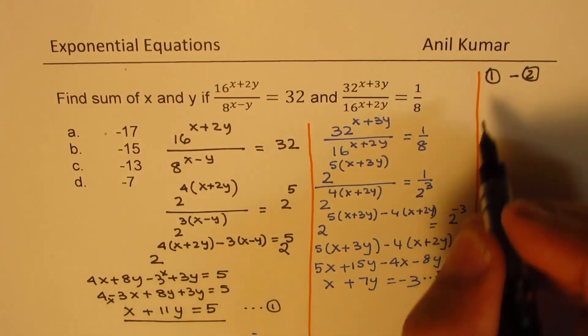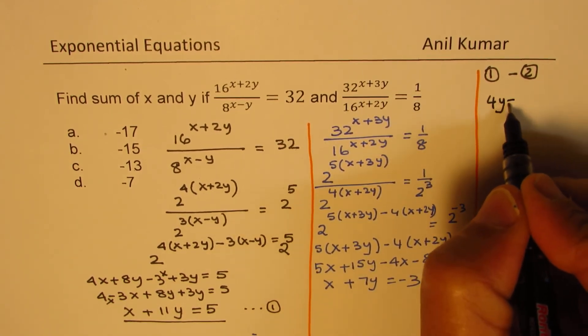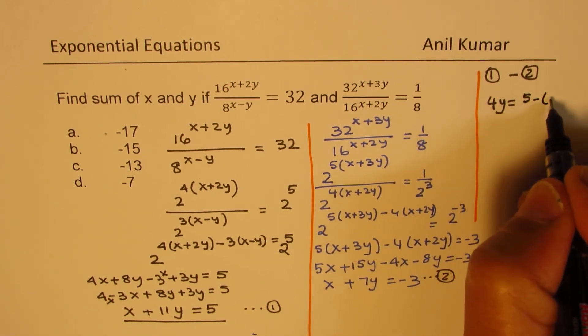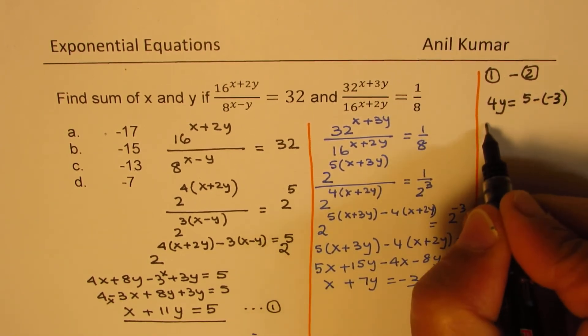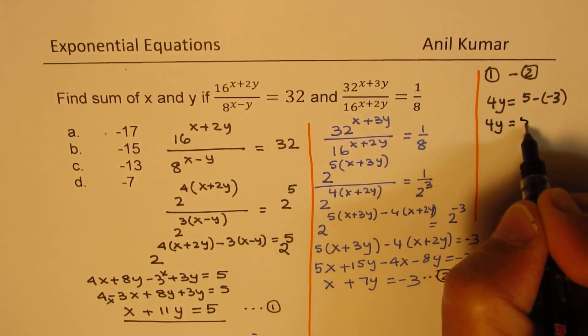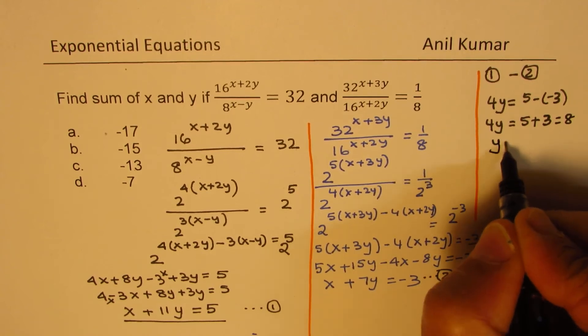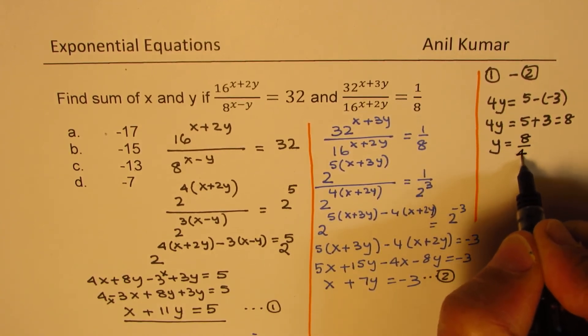11 minus 7 is 4y, so we get 4y equals 5 minus minus 3, which is 8. So 4y equals 5 plus 3, which is 8. So y is equal to 8 over 4, which is 2.